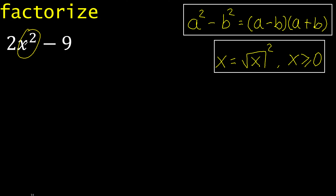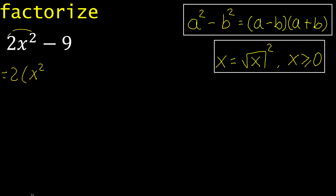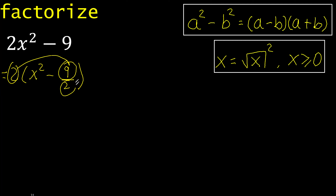Here x, exponent 2, here 2, therefore like this — because 2 multiplied by x exponent 2 is here, minus 9 divided by 2. Because 2 multiplied by 9 is 18, and 18 divided by 2 is 9.